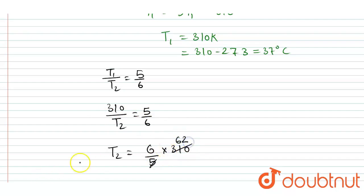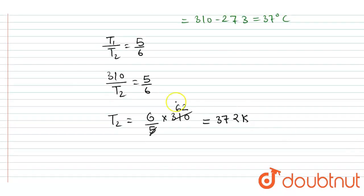This 5/6 will be cross multiplied to the 310. If you solve this, this will be cancelled out by 62, so 62 times 6 will be T₂, which equals 372 Kelvin. If I want to make it into degree Celsius, I will subtract 273 from this